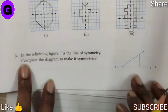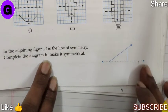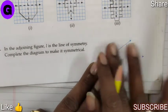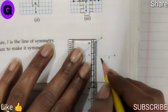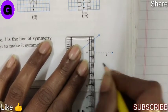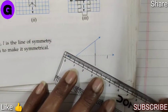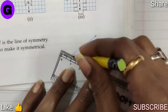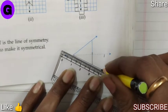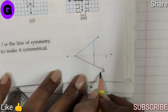Question number 3. In the adjoining figure, L is the line of symmetry, so we have to complete the diagram to make it symmetrical. Here we have completed the figure.